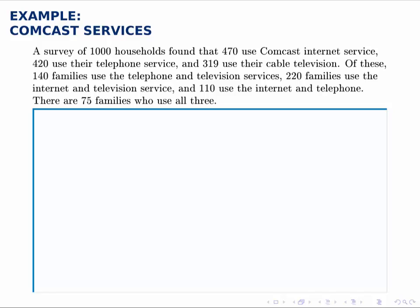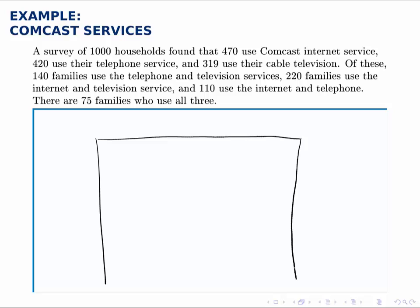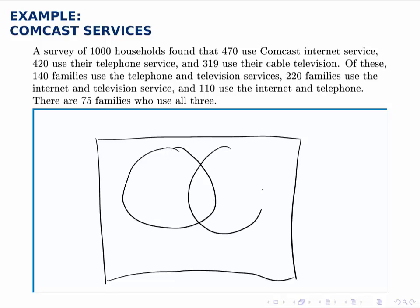Here's another survey problem with three groups. We're going to draw our Venn diagram again so that we can answer questions regarding the survey. Having the diagram will be helpful for us. We have three groups: internet service, phone service, and cable TV.